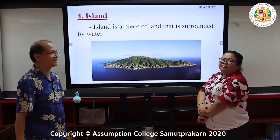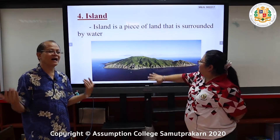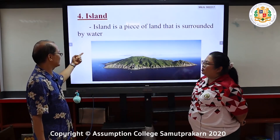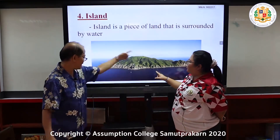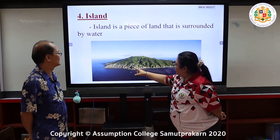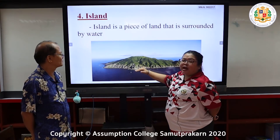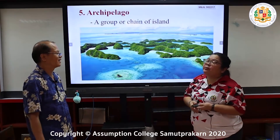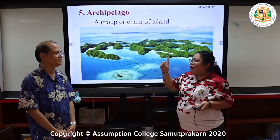We are living in Thailand, which also has a lot of islands. An island is a piece of land that is surrounded by water. As you can see in the picture, all around the island is water. That is an island — land surrounded by water.